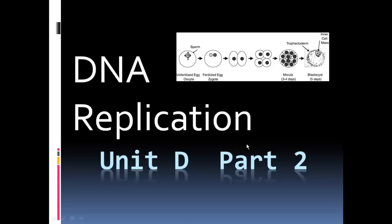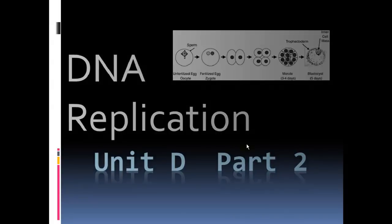Hi class, Ms. Sturley here. This is Unit D, Part 2, and in this screencast we're going to talk about DNA replication, how DNA makes an exact copy of its entire self to allow a cell to divide and have the exact same genetic material inside of it. And this is how you began as one cell and divided into the trillions of cells that you are today.